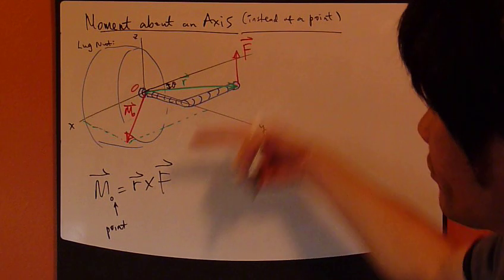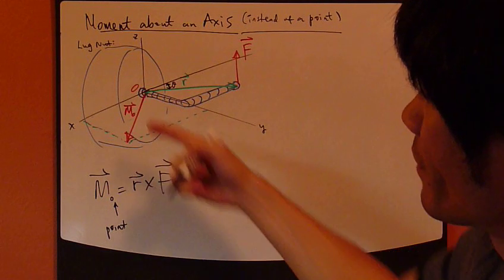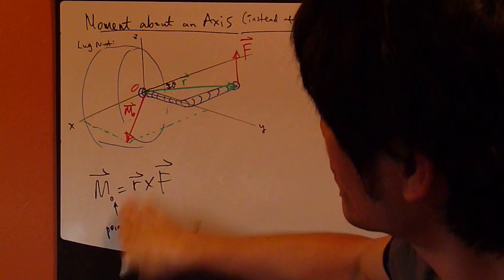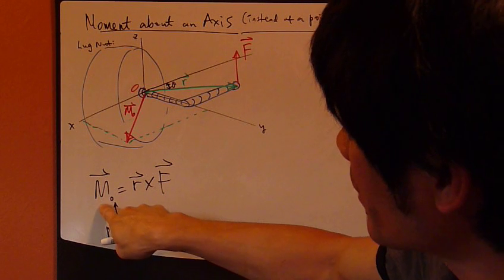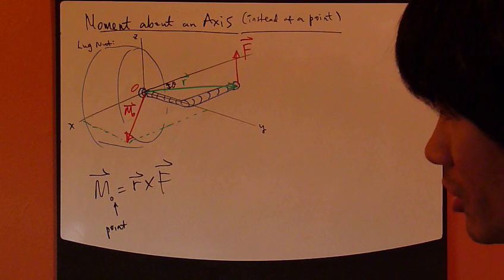So R cross F gives you moment O, about point O. That's fine, no problem. This moment right here, R cross F, it gives you the total effect, the total moment.